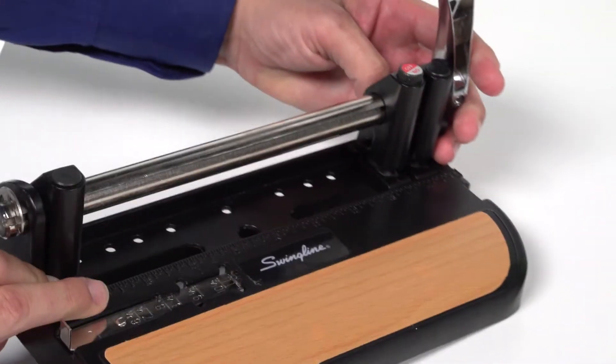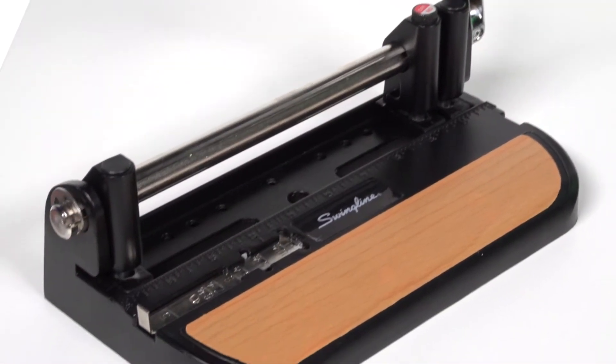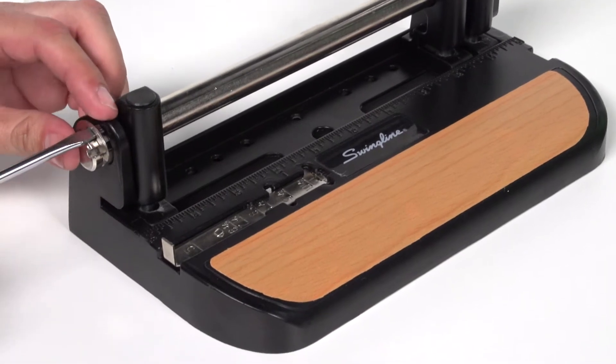Use a flat screwdriver to pry the flat C-shape retainer located at the end of the round metal shaft.